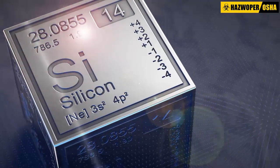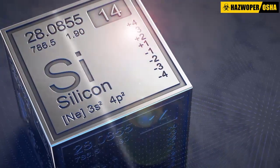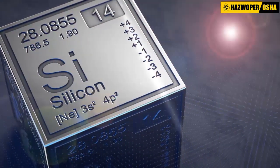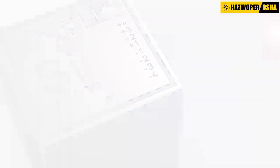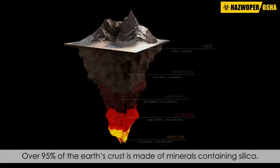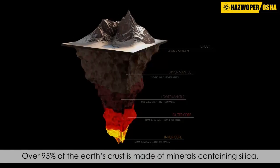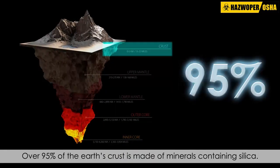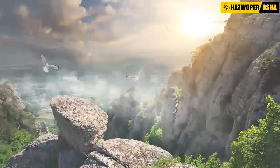All forms of silica are made from the same elements, but they have different structures. Silica is ubiquitous in the environment, with over 95% of the Earth's crust made of minerals containing silica.